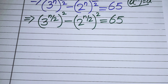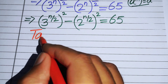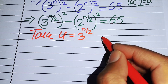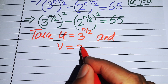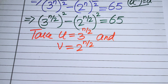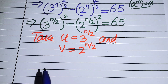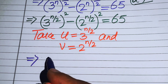After this step we need to convert this exponential equation into a quadratic form. So I take the substitution u equals 3 to the power of n over 2, and v equals 2 to the power of n over 2. We use these two substitutions to write the above expression in simplified form.